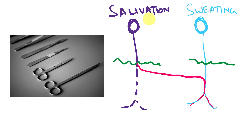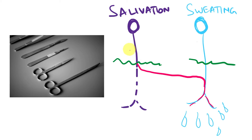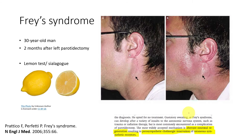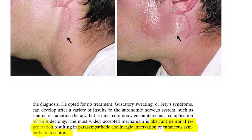So with that, if there is a salivatory stimulation, instead of going into the salivation pathway, through this regenerated new nerve tract it can cause sweating. That is what happened here — when the patient had a stimulation for salivation, it caused sweating. That is what is meant by aberrant neuronal regeneration causing parasympathetic cholinergic innervation to reach cutaneous sympathetic receptors.